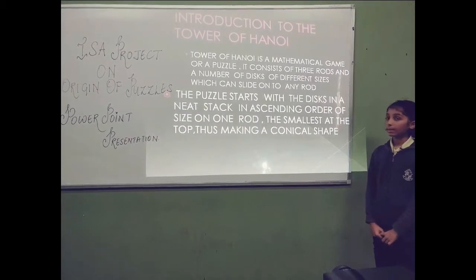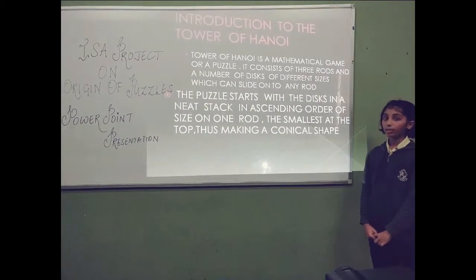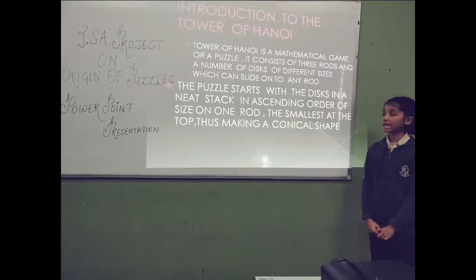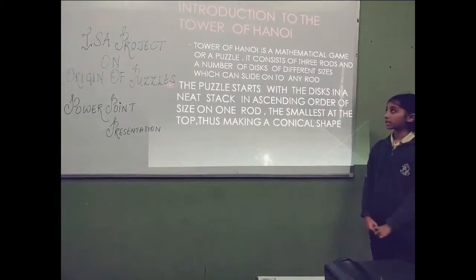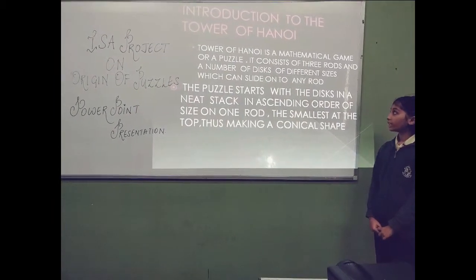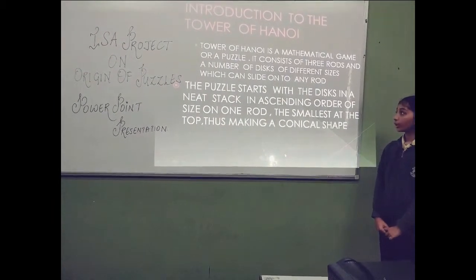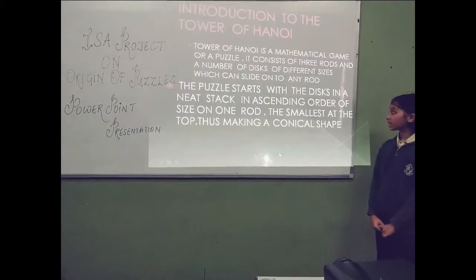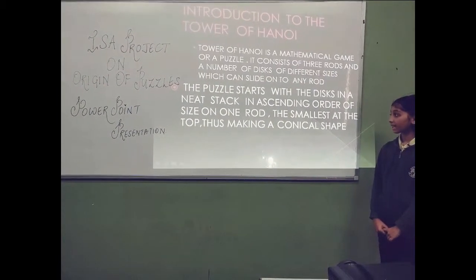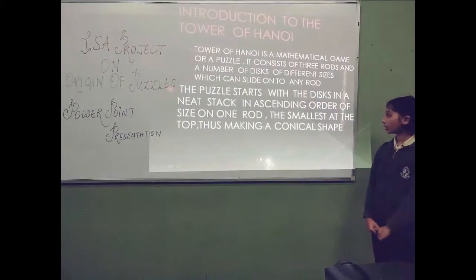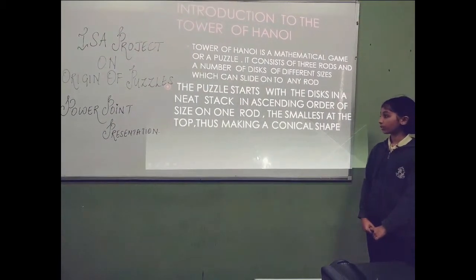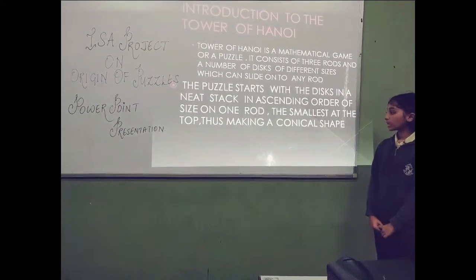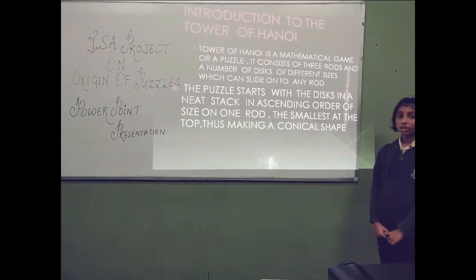Tower of Hanoi is a mathematical game or a puzzle. It consists of three rods and a number of discs of different sizes, which can slide onto any rod. The puzzle starts with the discs in a neat stack in ascending order of size on one rod, the smallest at the top, thus making a conical shape.